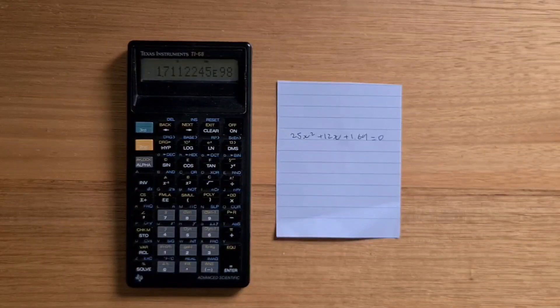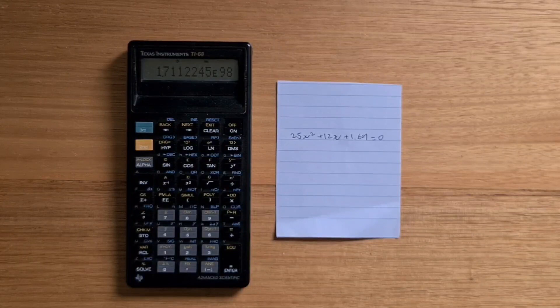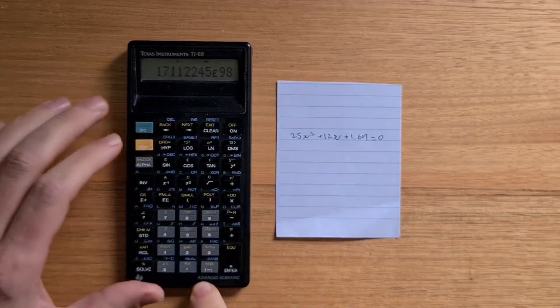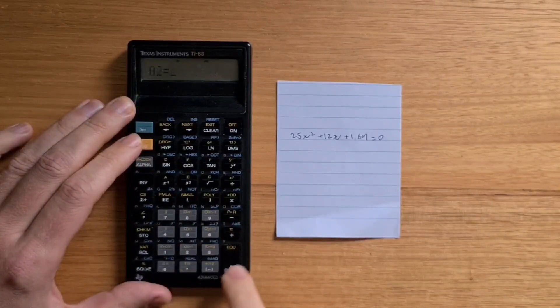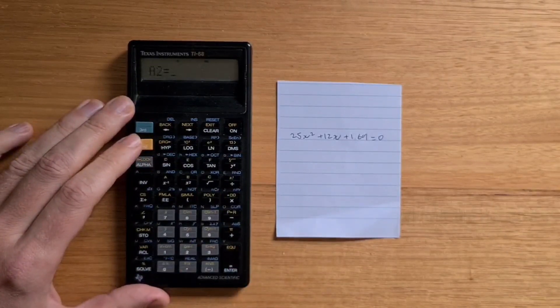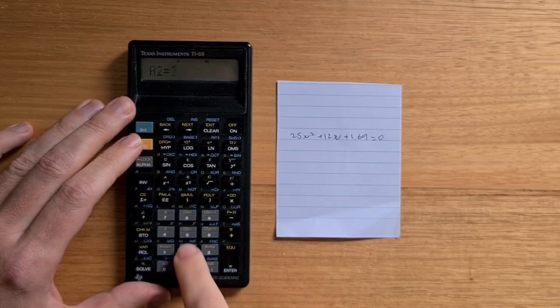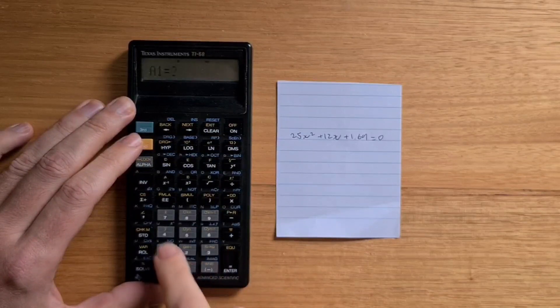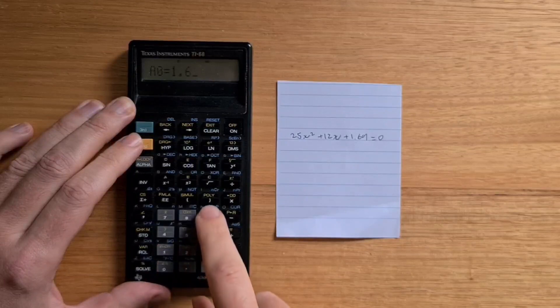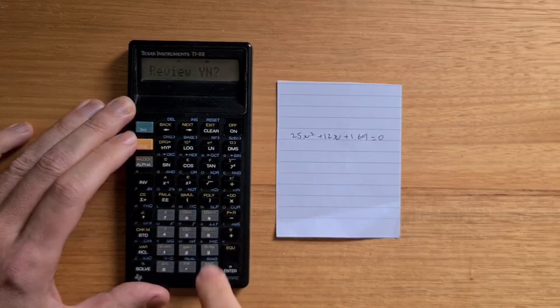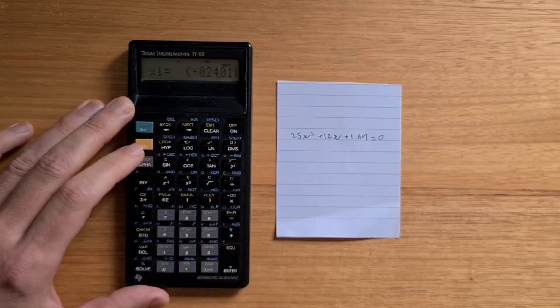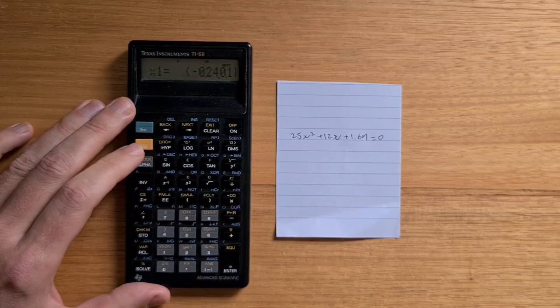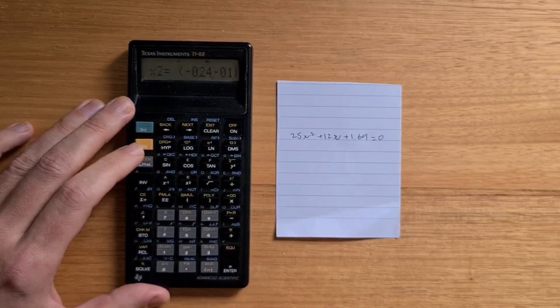The 68 has a root solver for second, third, or fourth order polynomials, where the roots may be real or complex. For example, to find the roots of this equation, we'd hit the poly button. Our order is 2, and now we can enter our exponents: 25, 12, and 1.69. We don't want to review our inputs. So the first solution is a complex one, and same with the second.